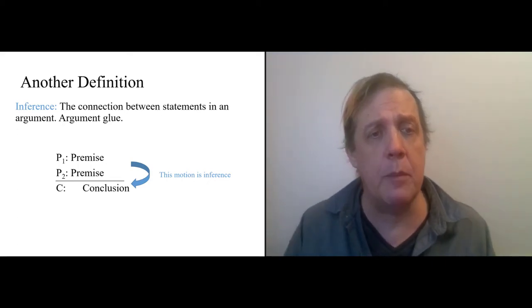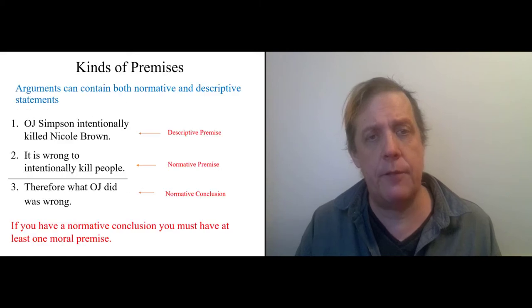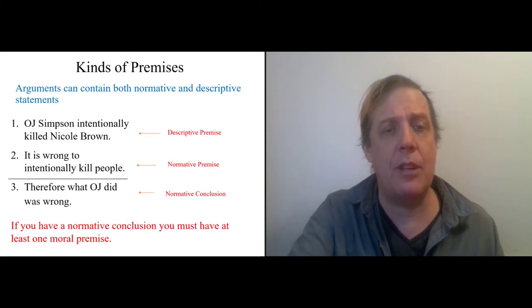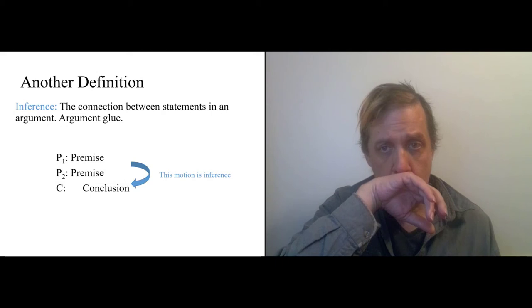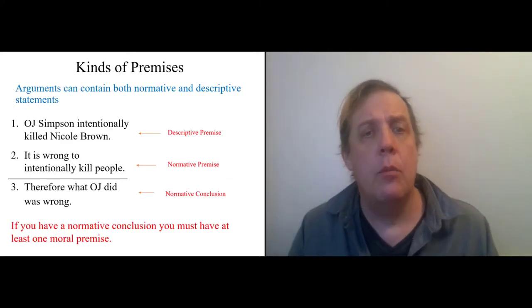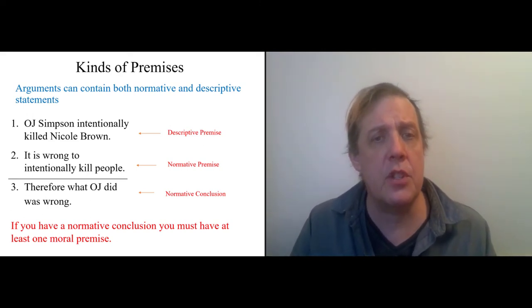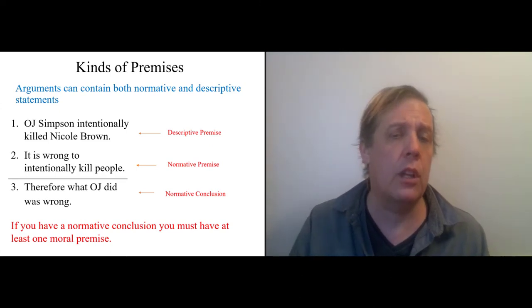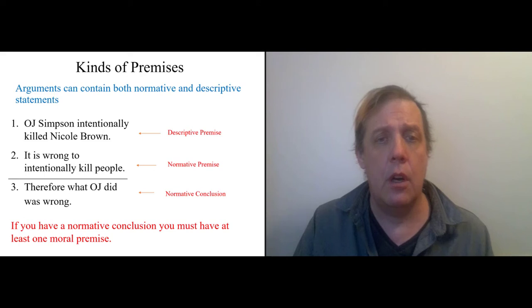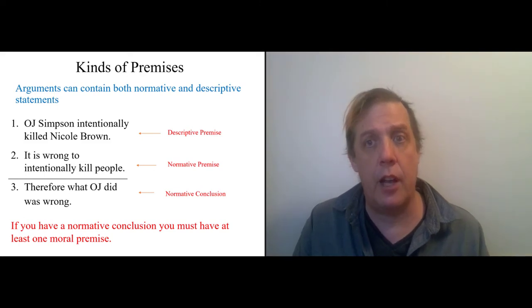So the last bit we want to say is that when you have an argument, you're going from premises to conclusion. And that means that you're making an inference. An inference is the link between premise and conclusion. Your premises, like I was saying before, can be either normative or descriptive. But here's a general rule. If you've got a normative conclusion, specifically like a moral conclusion, you need to also have a normative premise.